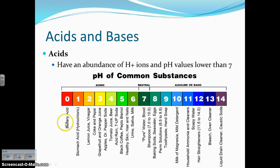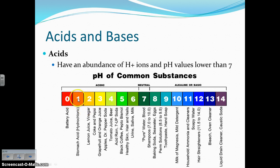Some common acids include battery acid, which is a very strong acid far from neutral — the further from neutral, the stronger the acid or base. Stomach acid, lemon juice, vinegar, soda, and coffee are all acids on the pH range.